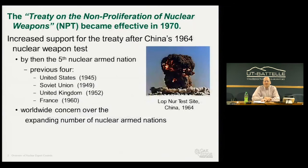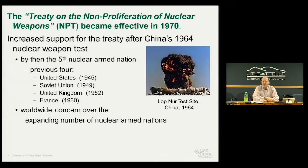The Treaty on the Non-Proliferation of Nuclear Weapons, which we refer to as the NPT, became effective in 1970. There was increased support for the treaty after China's first nuclear weapons test shot in 1964, which made China the fifth nuclear weapons state—the first four being the United States, the Soviet Union, the United Kingdom, and France. There was a worldwide concern about the expanding number of proliferant nuclear-armed states.